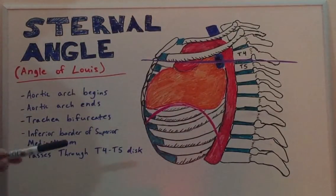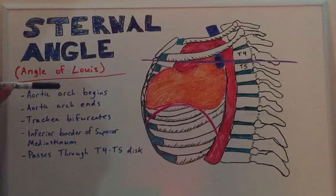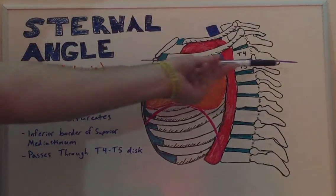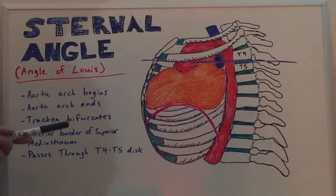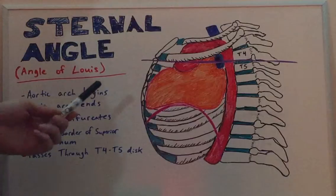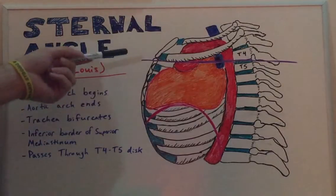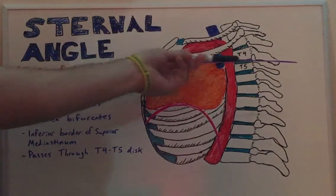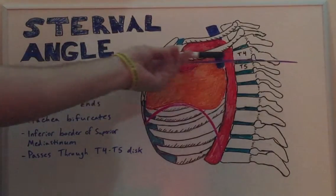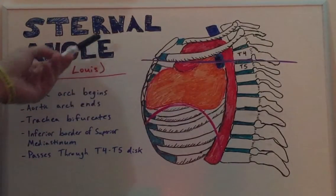As we can see from the angle of Louis, which typically runs at about 160 degrees, it has a number of structures which run through this angle.